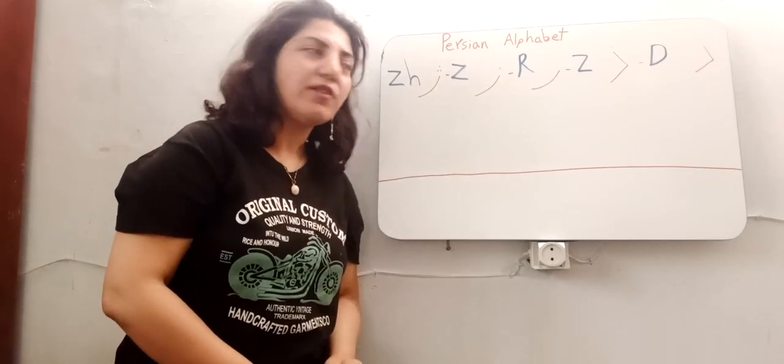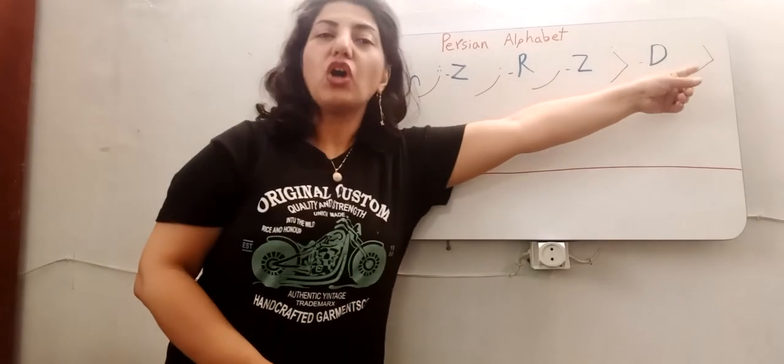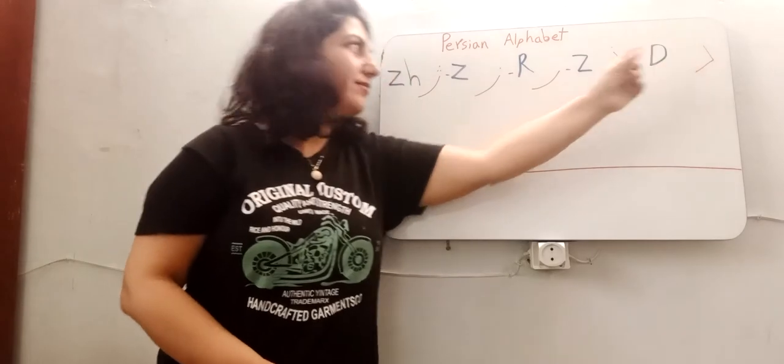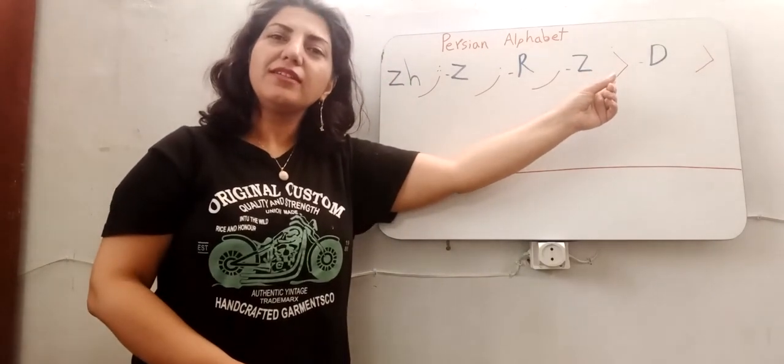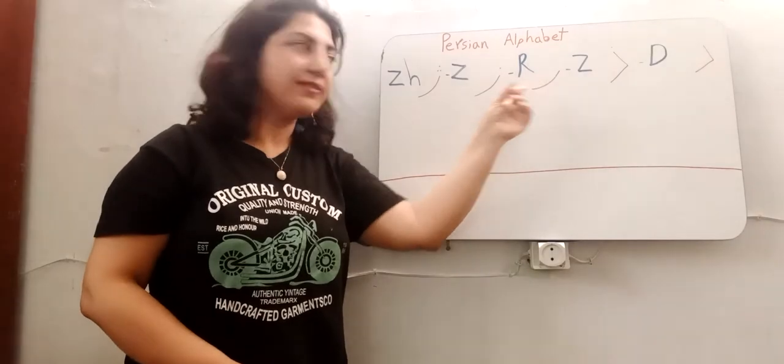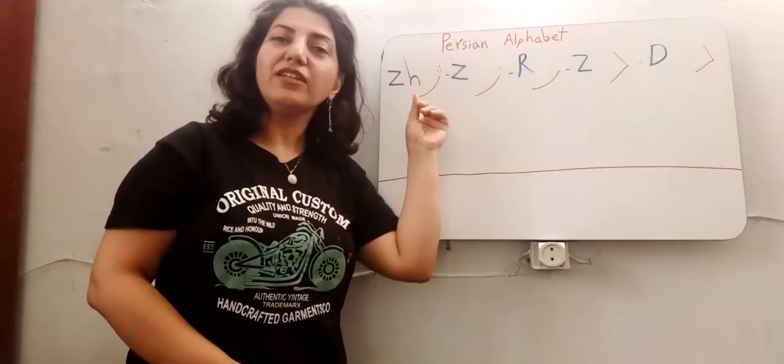The writing style of the alphabet letters: DAL sounds D, ZAL sounds Z, RE, Z and J.